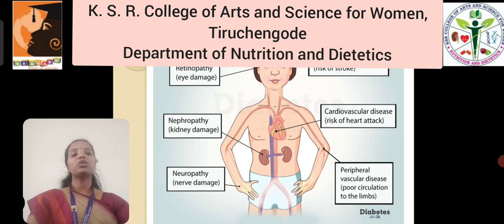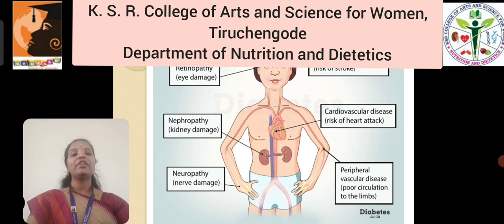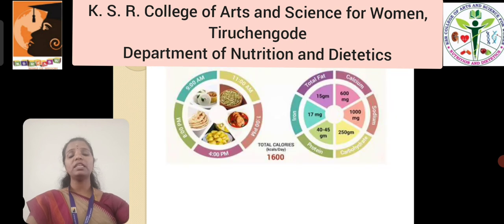Macrovascular complications include cerebrovascular disease with risk of stroke and brain stroke, cardiovascular disease with risk of heart attack, and peripheral vascular disease causing poor circulation to the limbs. The next topic is dietary management.